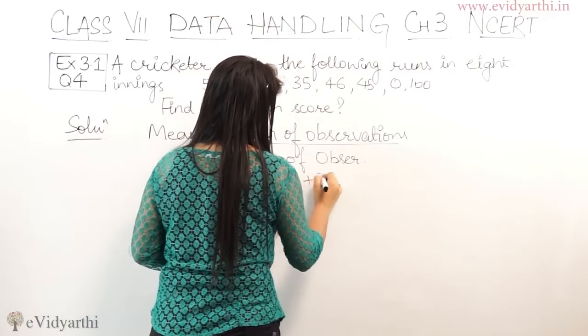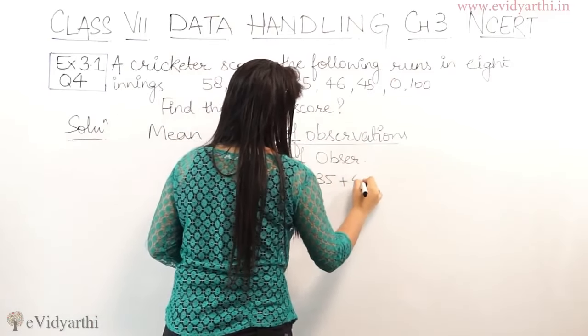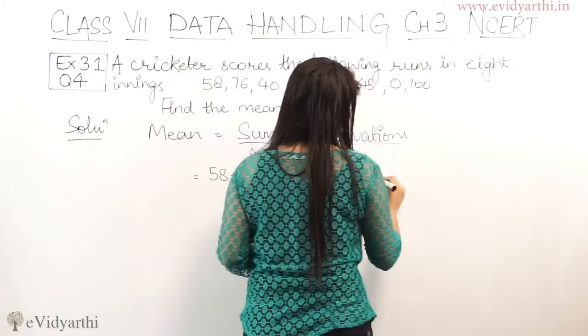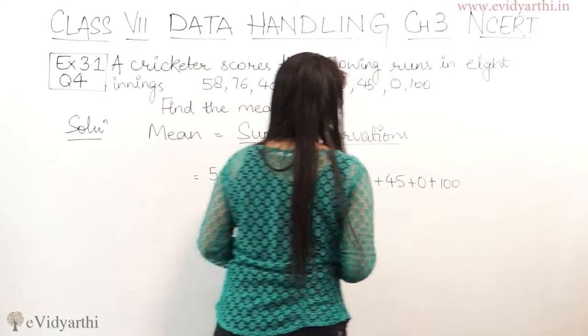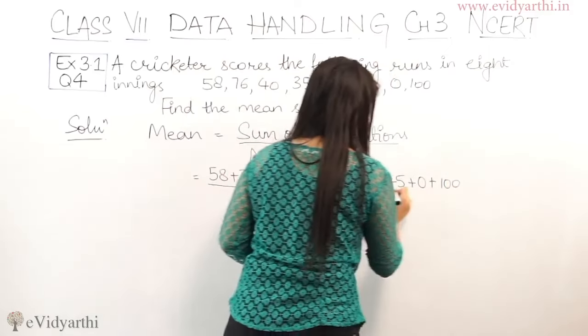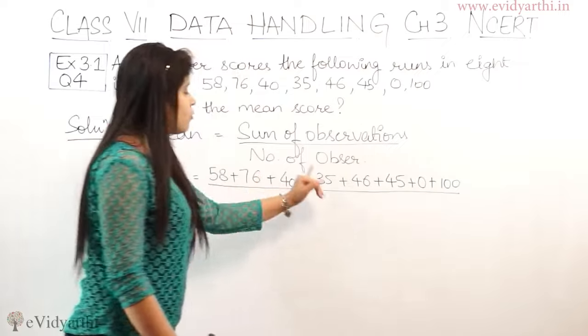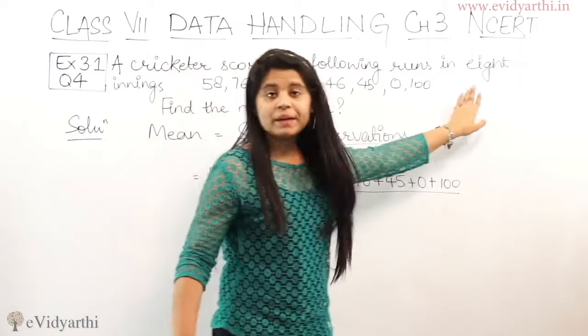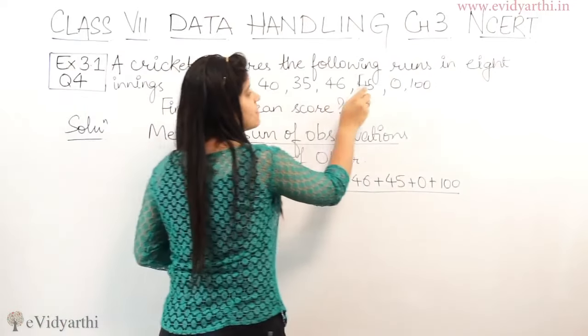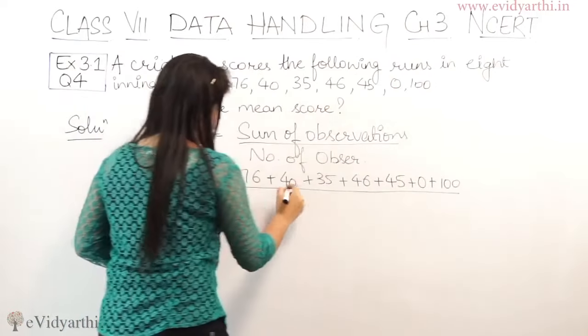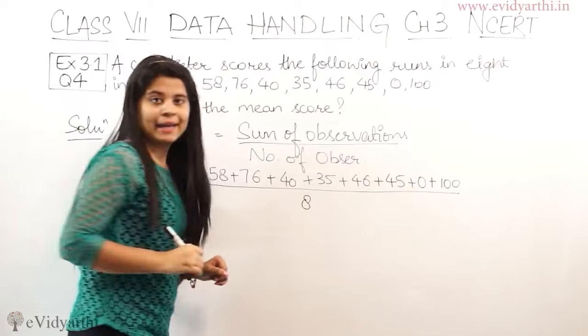The runs are: 58, 76, 40, 35, 46, 45, 0 and 100. So we need to add all the numbers. How many observations? We have 8. Let me count: 1, 2, 3, 4, 5, 6, 7, 8. So the number of observations is 8.